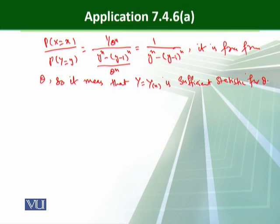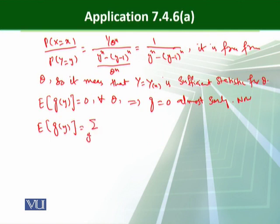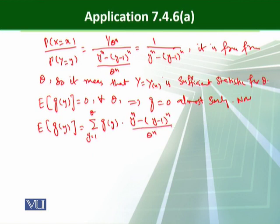Now we have to find the expected value of g(Y) equal to 0 for all theta, and this implies that g(Y) = 0 almost surely — this is the completeness condition. The expected value of g(Y) is the sum from y = 1 to theta of g(y) times its PMF, which is (y^n − (y−1)^n) / theta^n, and this equals 0.